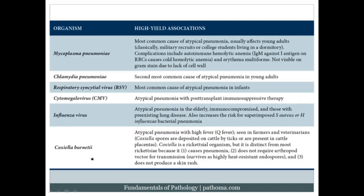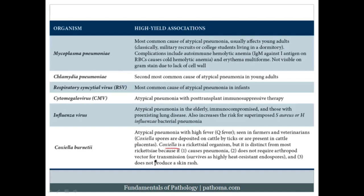Coxiella is an important cause of atypical pneumonia in farmers and veterinarians, classically associated with high fever — hence called Q fever. Unlike typical interstitial pneumonia with low fever, these patients have high fever. Exposure occurs through Coxiella spores deposited on cattle by ticks or present in cattle placentas. From microbiology, Coxiella is a rickettsial organism but differs from most rickettsiae: it causes pneumonia, does not require an arthropod vector, survives as a heat-resistant spore, and does not produce a skin rash.